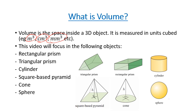In this video we're going to look at the following objects: rectangular prisms, triangular prisms, cylinders, square-based pyramids, cones, and spheres.